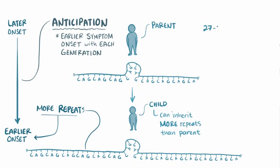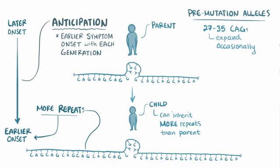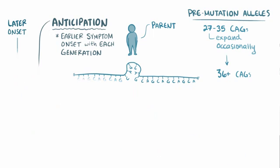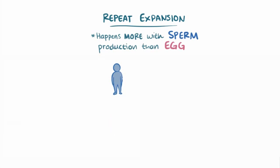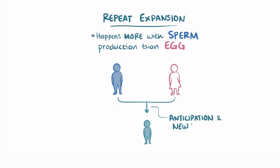Even repeats of 27–35 CAGs can expand occasionally, and these are called pre-mutation alleles, since they don't cause the disease but they're set up for developing a mutation of 36 or more CAGs. This process of adding more repeats is called repeat expansion, and it happens far more in the production of sperm than of eggs, so both anticipation and new disease alleles generally occur when the father is the affected parent.